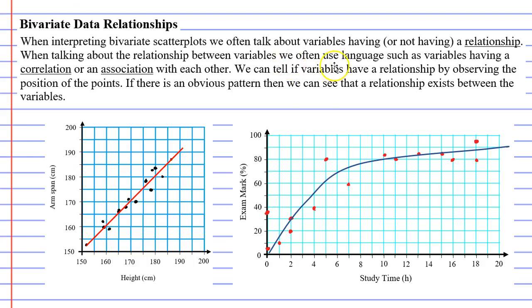Now when you complete problems from the textbook, they're not always going to use this word relationship. Sometimes they use words such as correlation or association. They all mean the same thing. We're all talking about the relationship between two variables, or the association or correlation between two variables.